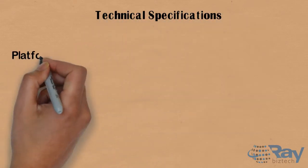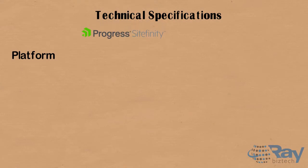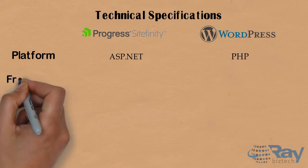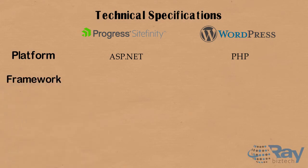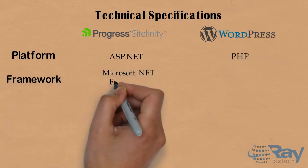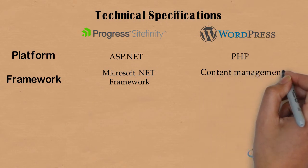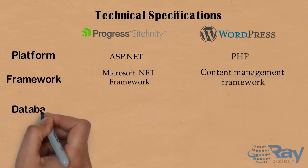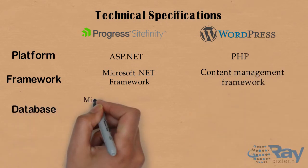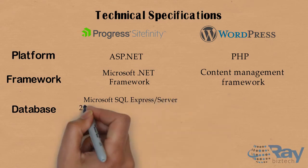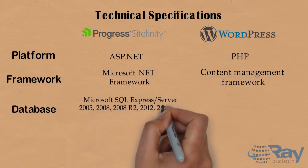Technical specifications: the platform for Progress Sitefinity is ASP.NET and for WordPress it's PHP. The framework for Progress Sitefinity is Microsoft .NET Framework, and for WordPress it's Content Management Framework.